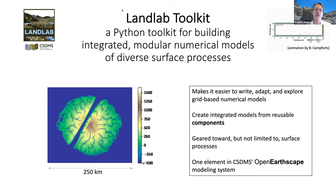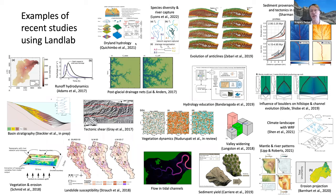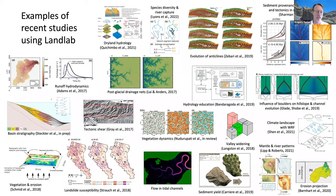This slide shows images from different papers that have used Landlab in different contexts, giving a sense of the topical variety. There's a dryland hydrology simulator from a group in the UK, work by Nathan Lyons on how river captures drive speciation of aquatic species, and examples ranging from hydrodynamics, basin stratigraphy, tectonics, landslide susceptibility, tidal circulation in tidal marshes, sediment yield, earth's mantle-related tectonics, and more. It's a pretty diverse package.